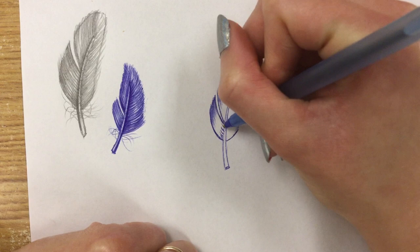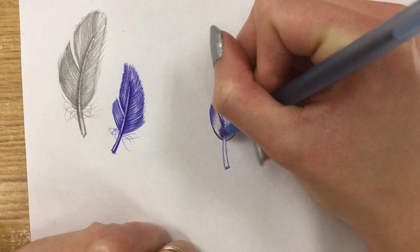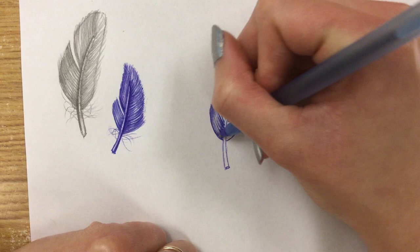Then I work from the inside out. So I'm going to add a couple lines on the inside. They're a little far apart so I'll add a couple more. So this looks really wispy and light.